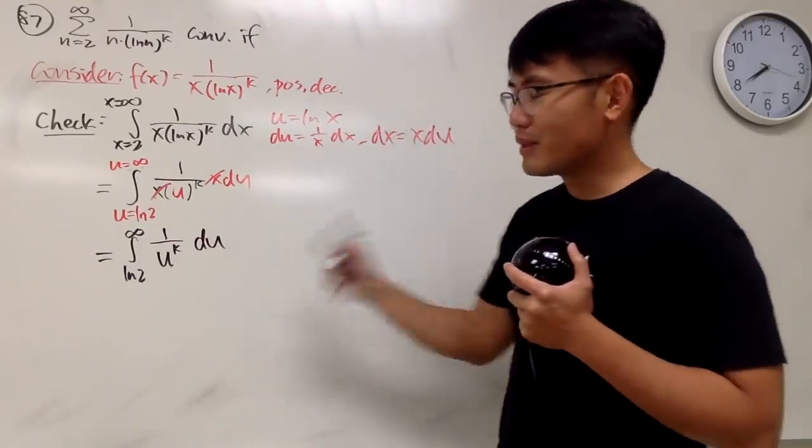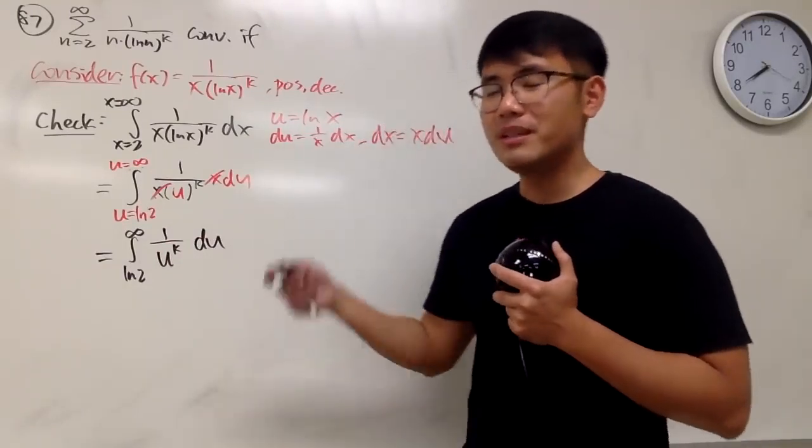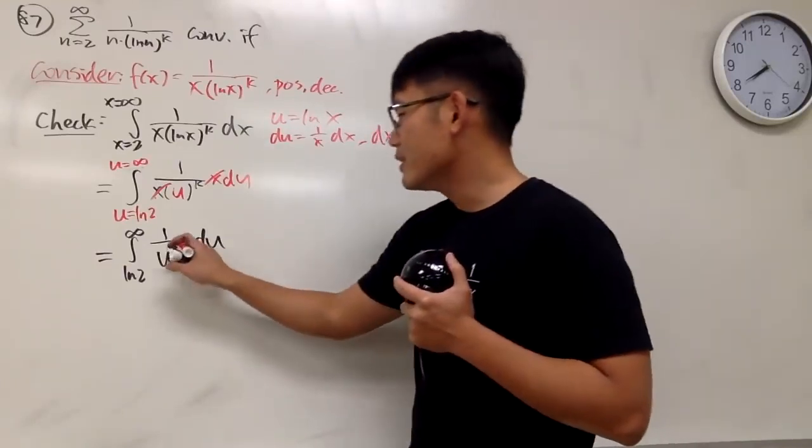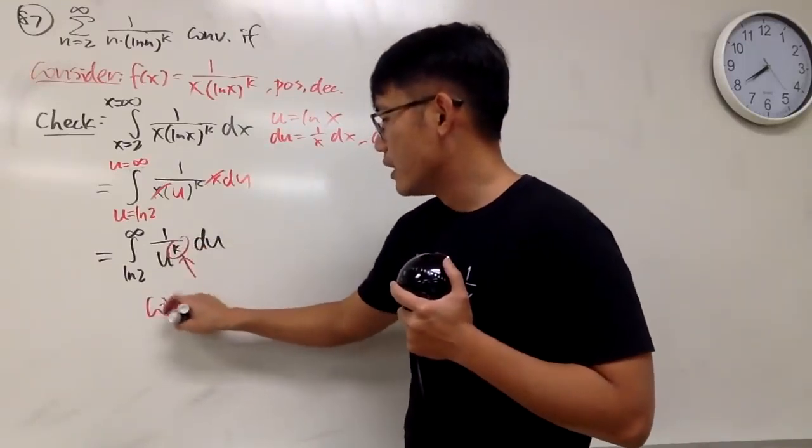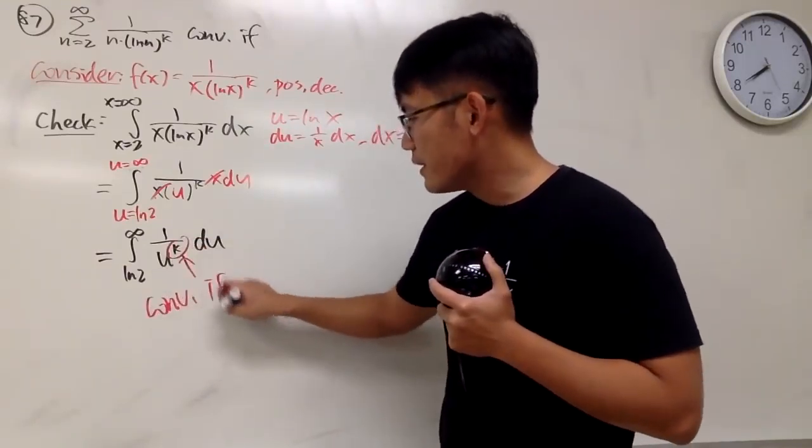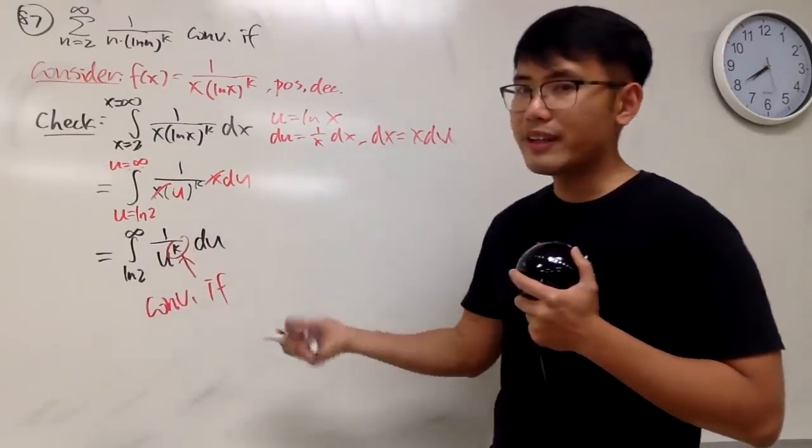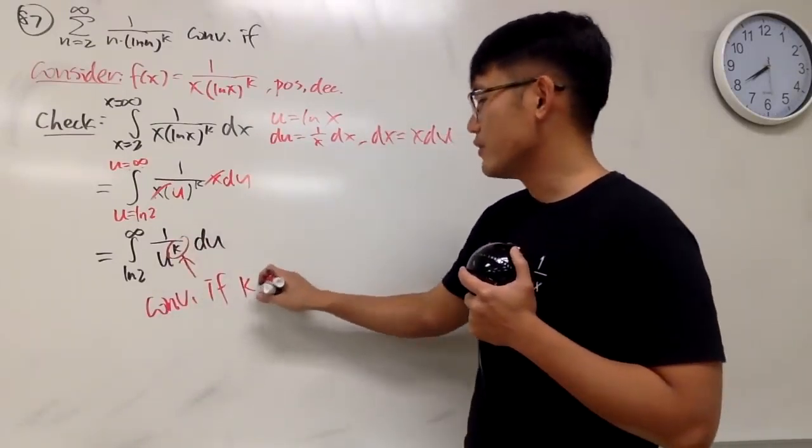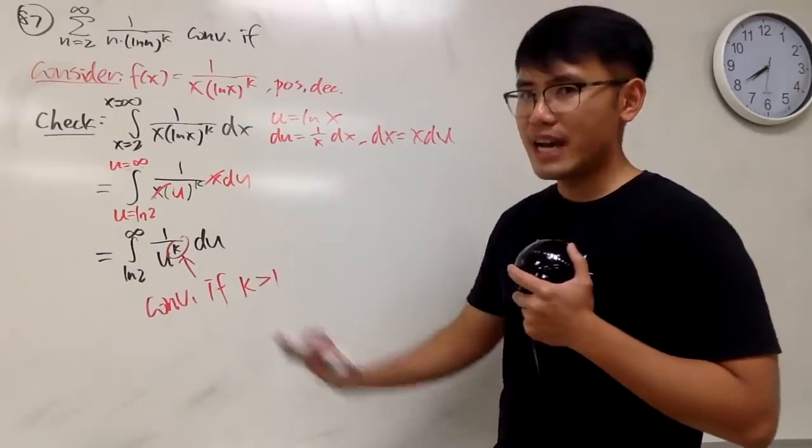Yes, we have talked about this before. This is the p-integral, the p-test for the integral, right? This right here, we know converge if the exponent here is greater than 1. So converge if k is greater than 1, not equal to, right?